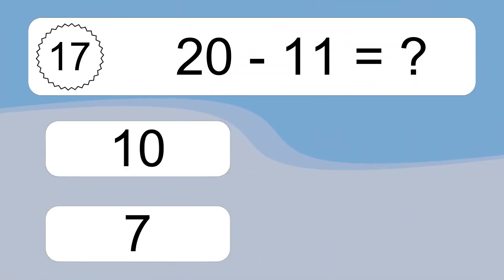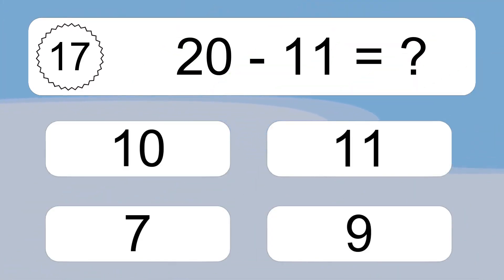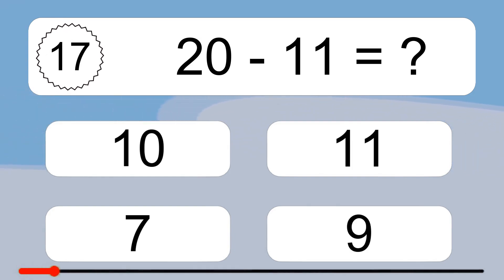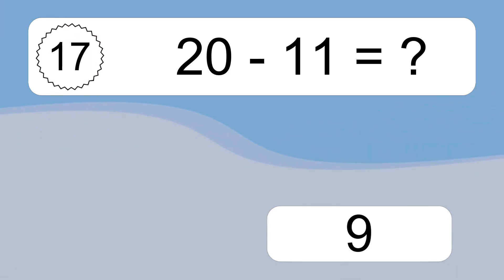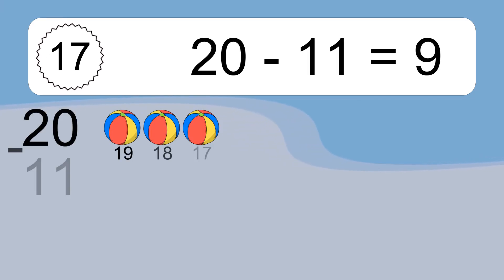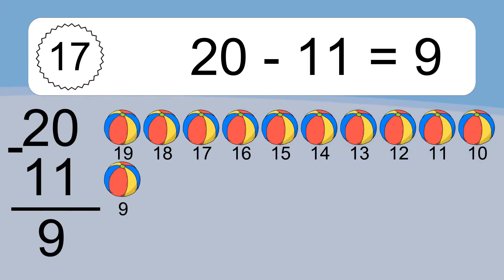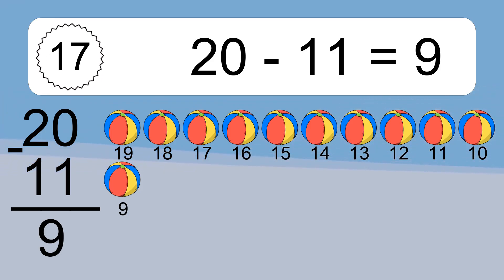20 minus 11 equals what? 20 minus 11 equals 9. Let's count it: 19, 18, 17, 16, 15, 14, 13, 12, 11, 10, 9.